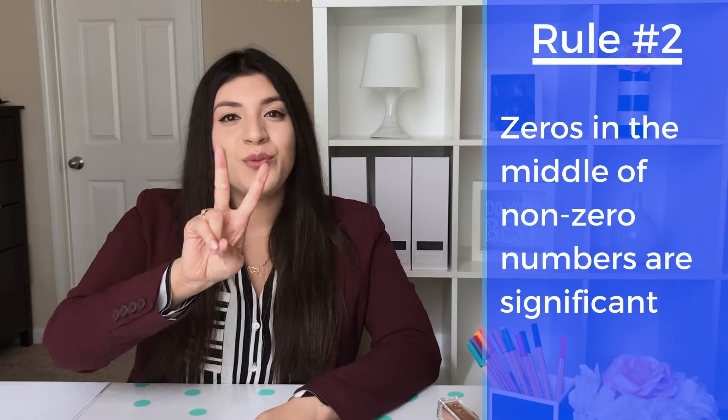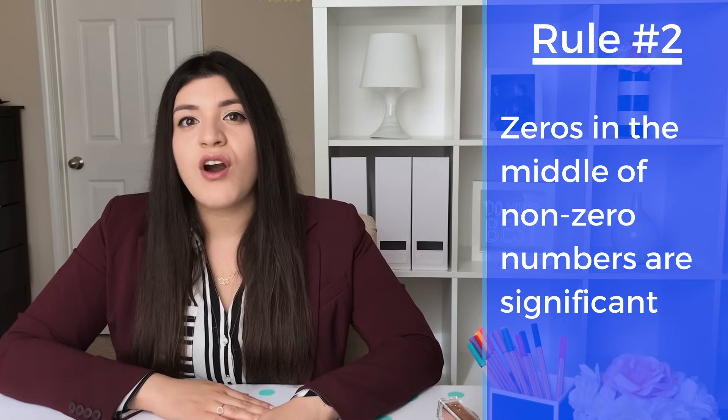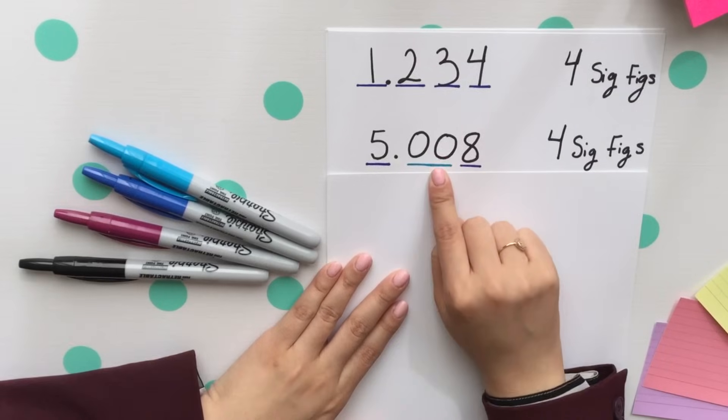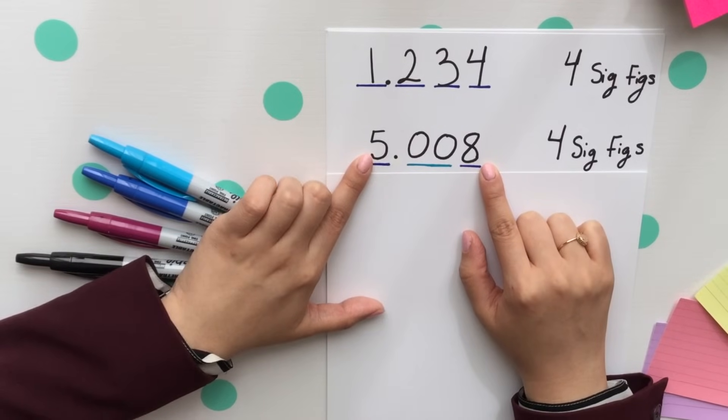Rule number two, any zeros that are in the middle of non-zero numbers are significant. These two zeros are in the middle of five and eight. Five and eight are two non-zero numbers, so every single digit counts as significant.